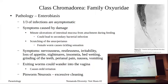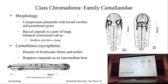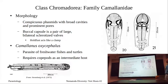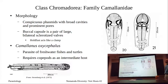Moving on: pinworms are named for their characteristic tail. Next we have Camelanus, family Camelanidae — non-human worms that we do have samples of. Their morphology features conspicuous phasmids with broad cavities and prominent pores — phasmids are located on the tail and are fairly easy to see under low-power scanning electron microscopes.